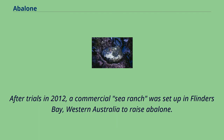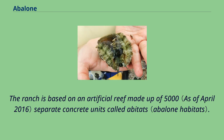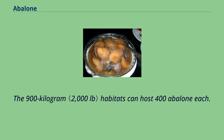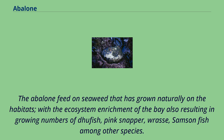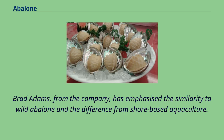After trials in 2012, a commercial sea ranch was set up in Flinders Bay, Western Australia to raise abalone. The ranch is based on an artificial reef made up of 5,000 separate concrete units called abitats. The 900-kilogram habitats can host 400 abalone each. The reef is seeded with young abalone from an onshore hatchery. The abalone feed on seaweed that has grown naturally on the habitats, with the ecosystem enrichment of the bay also resulting in growing numbers of dhufish, pink snapper, wrasse, and samson fish among other species. Brad Adams from the company has emphasized the similarity to wild abalone and the difference from shore-based aquaculture.